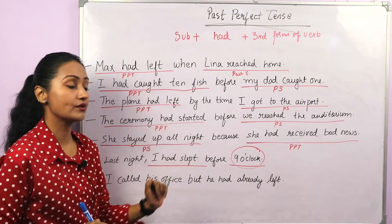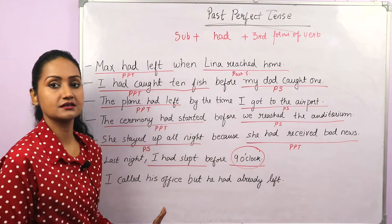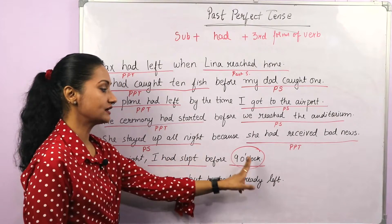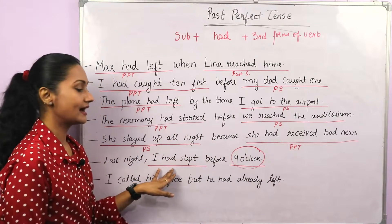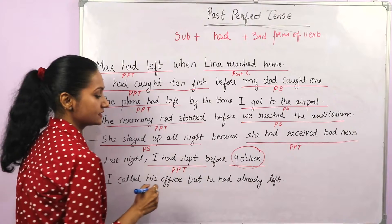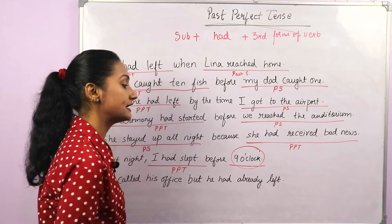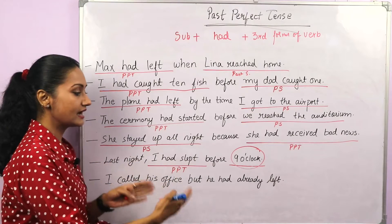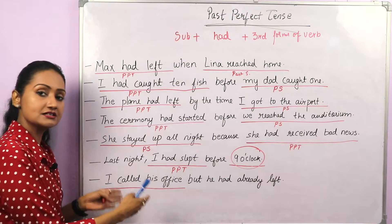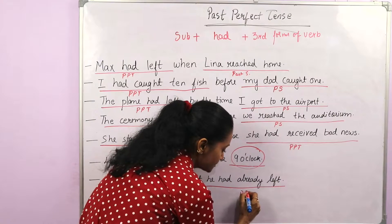Next: 'Last night I had slept before nine o'clock.' Here we do not have a second sentence in simple past, but 'last night' shows past. So 'last night' is the simple past reference point, and before that, 'I had slept' — past in past — that's why it is in past perfect tense. Next: 'I called his office but he had already left.' 'I called' is subject plus second form — past simple, the later action. 'He had already left' is the earlier action — past perfect.